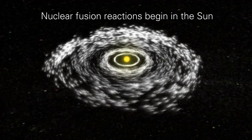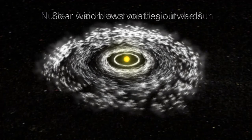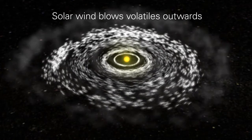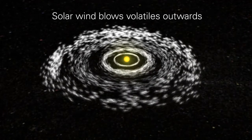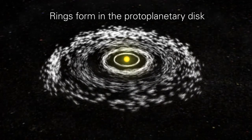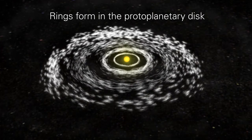The sun sent out intense radiation and solar wind into the space around it. The solar wind cleared the inner proto-planetary disk of most volatiles, leaving behind the refractory elements, which began to collect into rings.